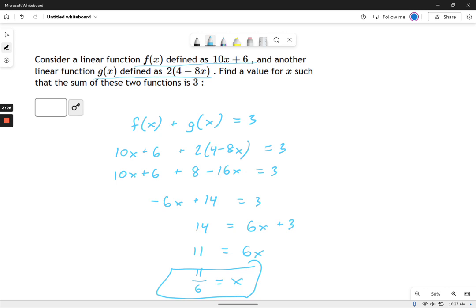Sometimes you will also get fractions as your answer. And that's okay. It's not your fault. It's the person who made the equation. In this case, if x equals 11 over 6, then the sum of these two equations, or these two functions, will be 3.